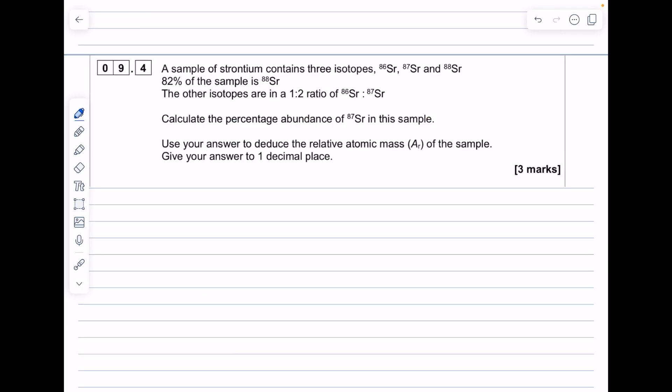I chose this question because it is slightly more tricky due to this mention of a ratio. A sample of strontium contains three isotopes: 86, 87, 88 strontium. 82% of the sample is 88 strontium. The other isotopes are in a 1 to 2 ratio of 86 to 87 strontium. That's probably the line of this question you might not like. Calculate the percentage abundance of 87 strontium in the sample and use your answer to deduce the relative atomic mass of the sample, giving your answer to 1 decimal place.